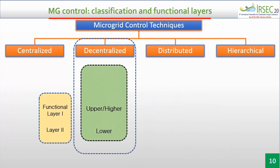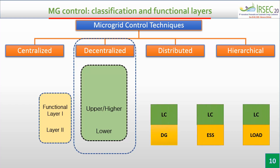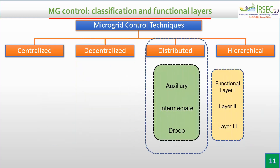Decentralized control mainly has a two-stage structure, mostly named upper and lower level controllers. The decentralized control method uses local measurements and predefined algorithms embedded in them, and it decides actions at the component level. A multi-agent system is the best way to implement the decentralized control method.